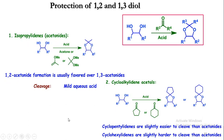The second way for the protection of the 1,2 and 1,3-diol is the cycloalkylidene acetal. This can be done by using a cyclic ketone like cyclopentanone or cyclohexanone to form the cyclopentylidene or cyclohexylidene. The cyclopentylidenes are slightly easier to cleave than the acetonide, and the cyclohexylidenes are slightly harder to cleave than acetonide. So the order of deprotection is: cyclopentylidene > acetonide > cyclohexylidene.